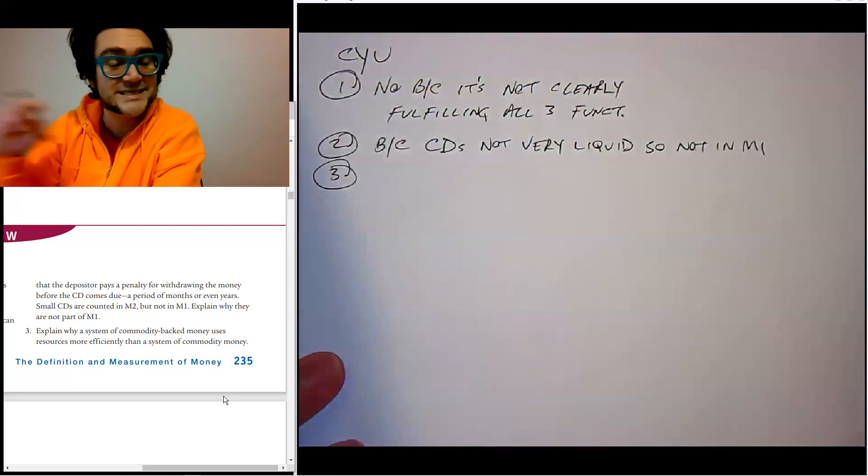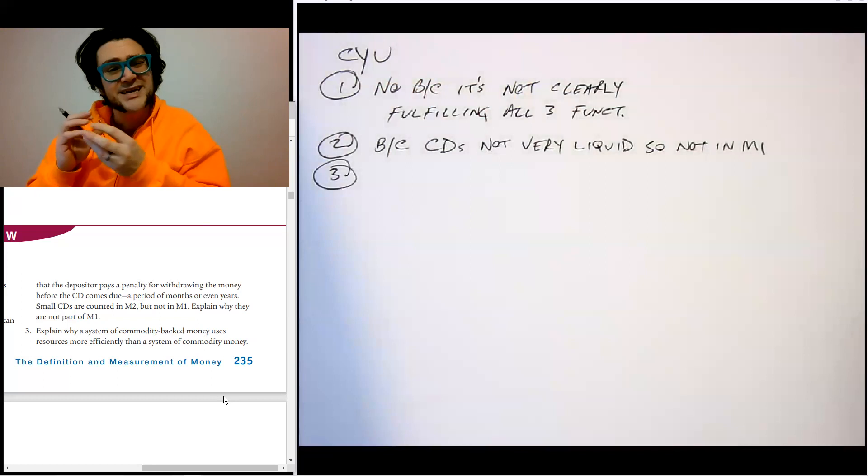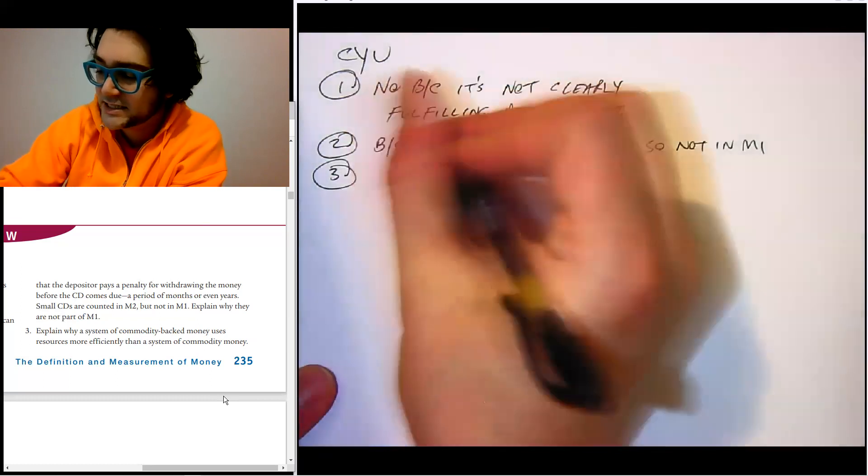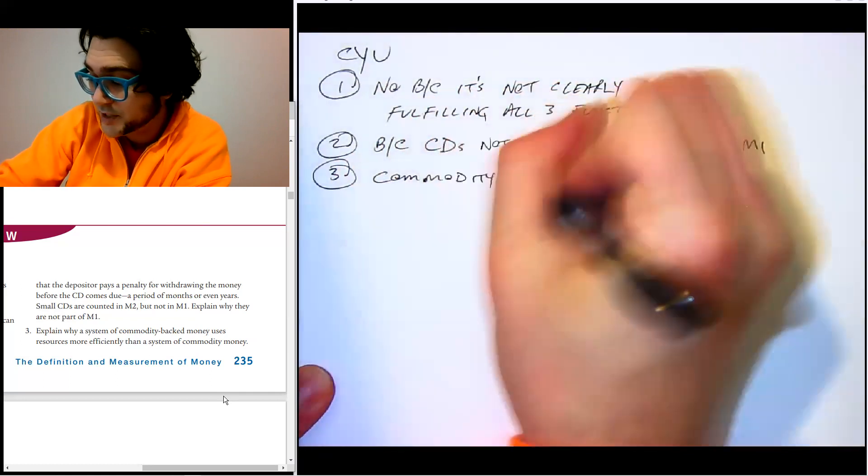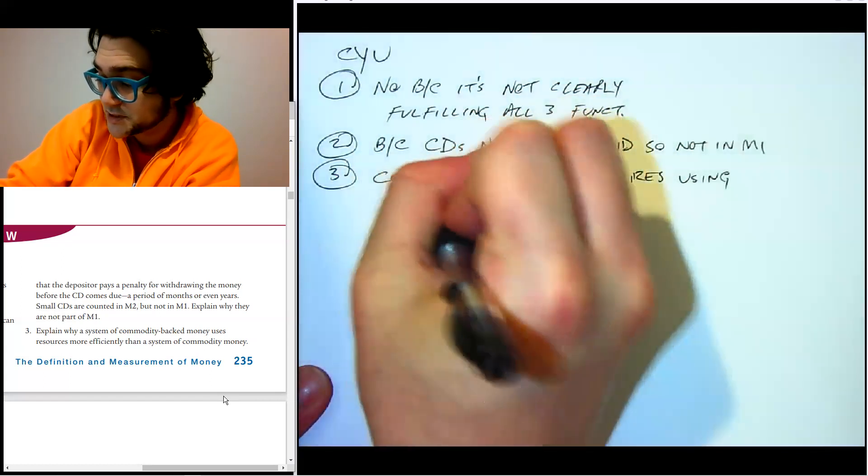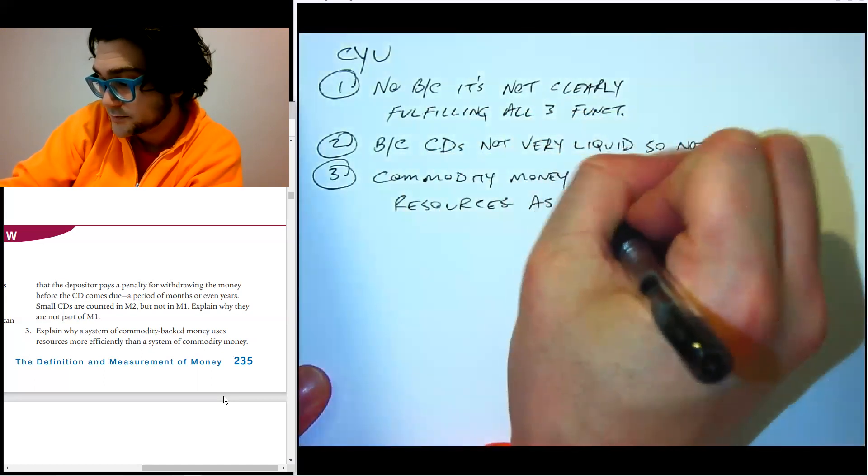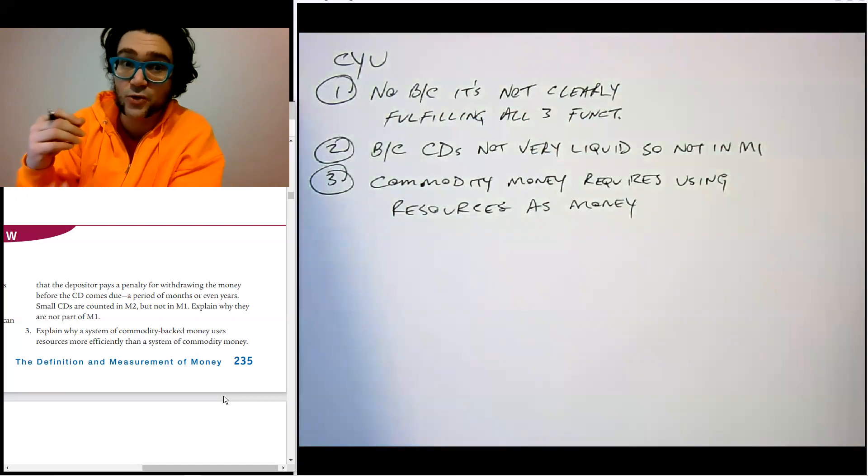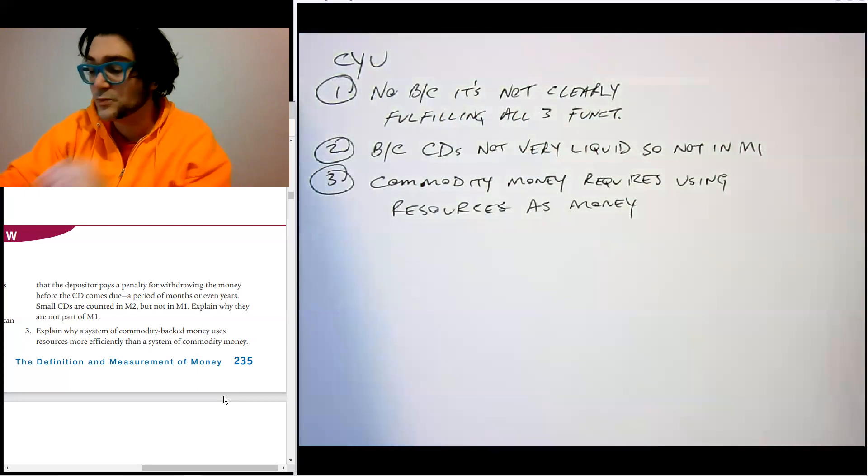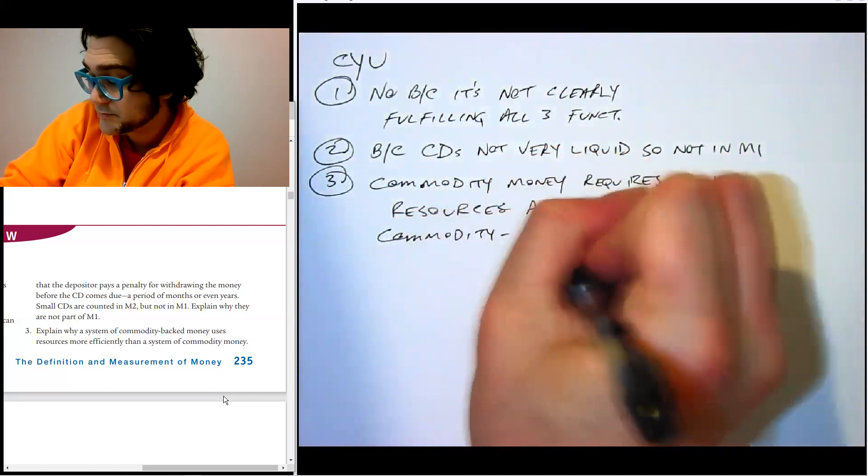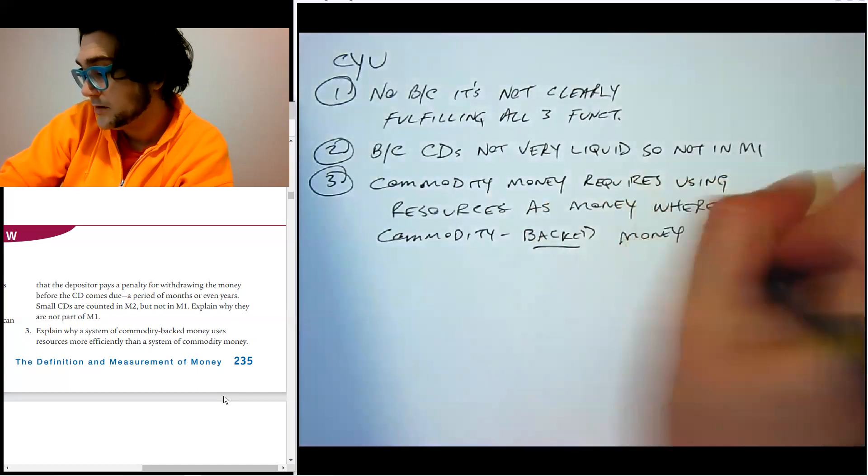Number three, explain why a system of commodity-backed money uses resources more efficiently than a system of commodity money. Now it's unlikely you're going to see a question like this on the test, but the section that's in here actually does talk about why this would actually be advantageous. And it goes all the way back to 1776 with Adam Smith, one of the founders of modern economics. And this is the idea that commodity money requires using resources as the money. So the downside is that if you're using the commodity money, you actually have to use the actual silver and gold as the money.